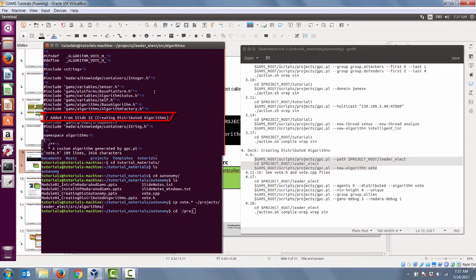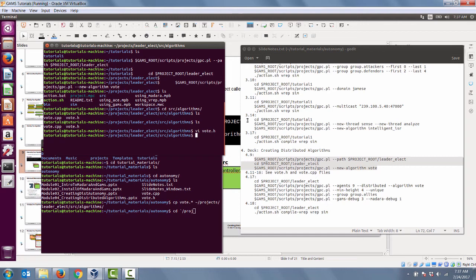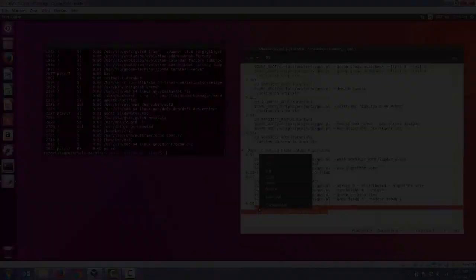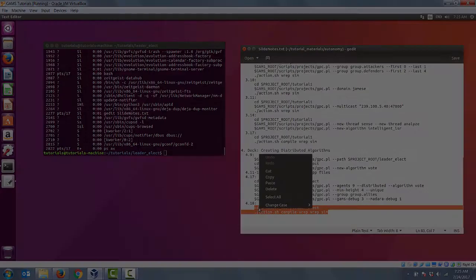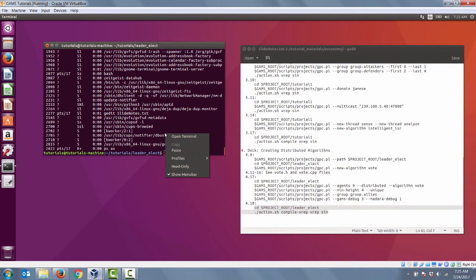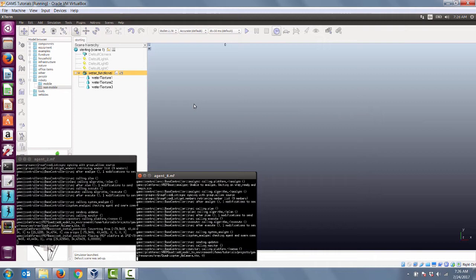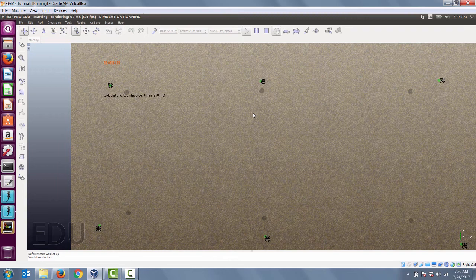Next, we copy the commands from slide 17 to configure the simulation to run. Last we copy the slide note commands to run the action.sh program with the options to compile, run, and simulate the algorithm. As you can see, VREP starts up and all the agents are right in front of us. Each agent is going to arrange itself into a formation around the leader in the cardinal directions and also in the northeast, northwest, southwest, and southeast corners. You can see them moving into position right now.